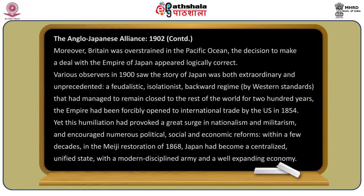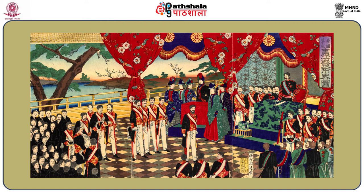Japan's empire had been forcibly opened to international trade by the US in 1854 with the arrival of Commodore Matthew Perry. Yet this humiliation had provoked a great surge in nationalism and militarism and encouraged numerous political, social, and economic reforms. Within a few decades, following the Meiji Restoration of 1868, Japan had become a centralized, unified state with a modern disciplined army and a well-expanding economy.